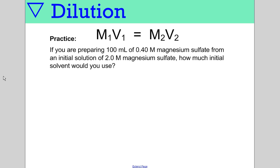If you're preparing 100 mils of 0.4 molar magnesium sulfate from an initial solution of 2 molar magnesium sulfate, what would the initial volume of the solution be? Key idea here: volume can be in liters, but it doesn't have to be. As long as you understand that you used milliliters on the start side, you must finish with milliliters on the end side. Our initial molarity is 2.0 molar. We don't know our initial volume. Our final molarity is 0.40 times our final volume of 100 milliliters.